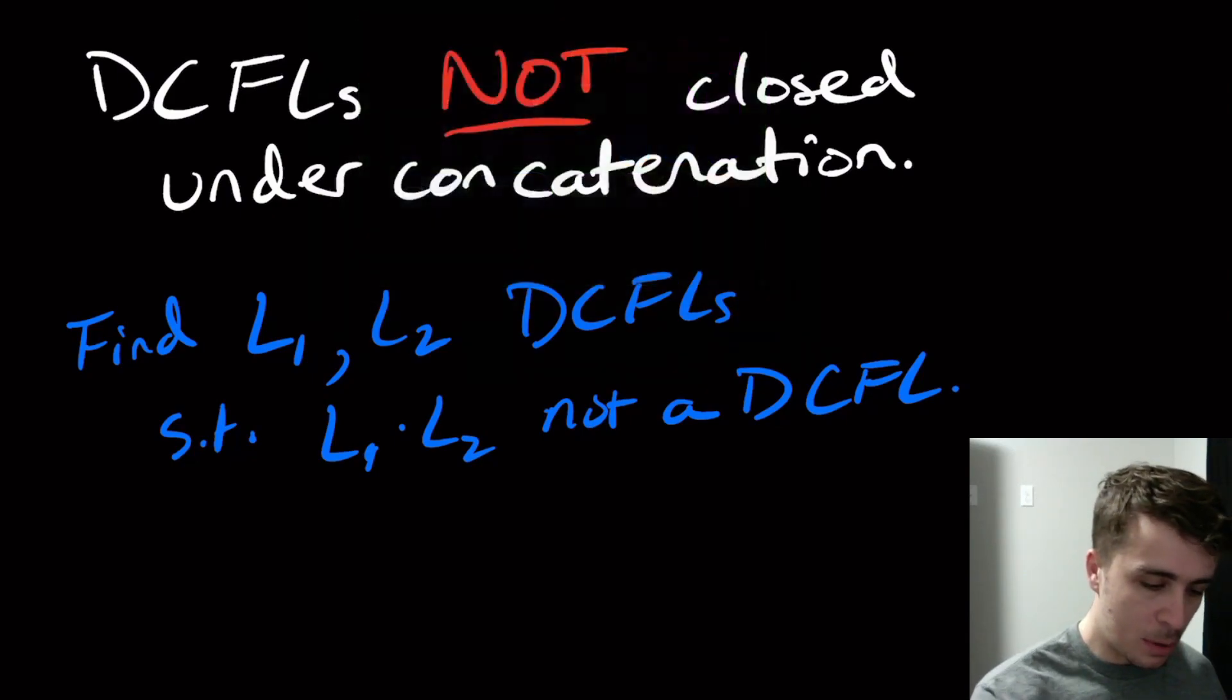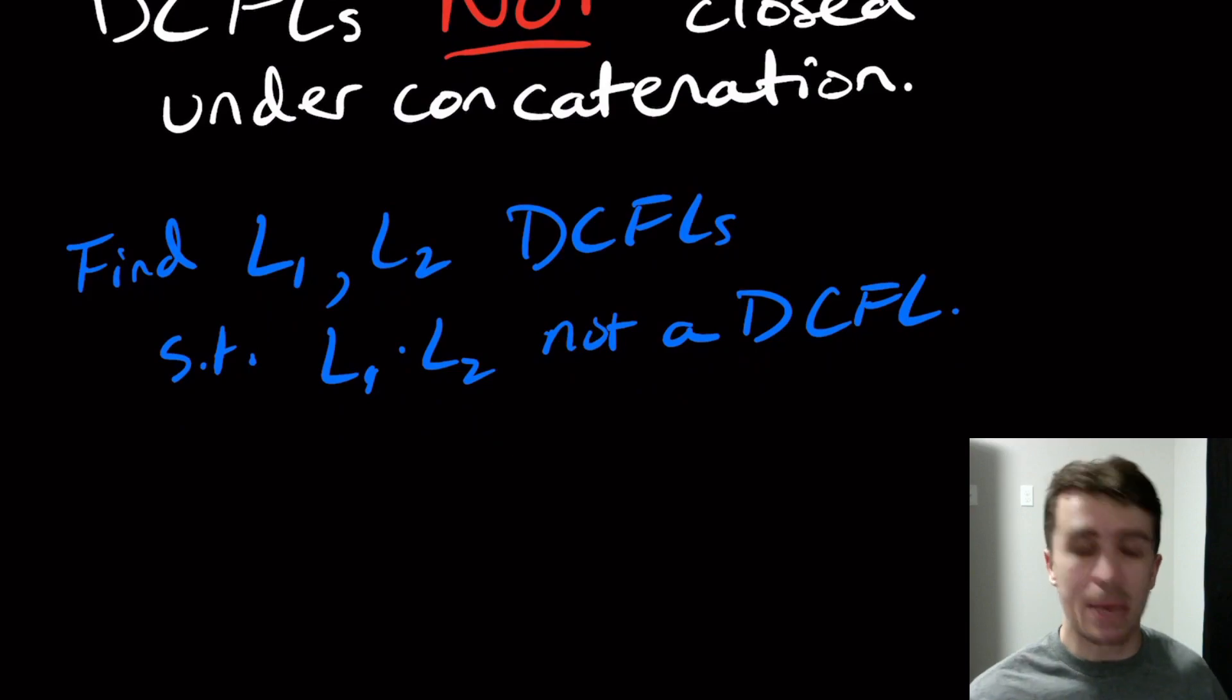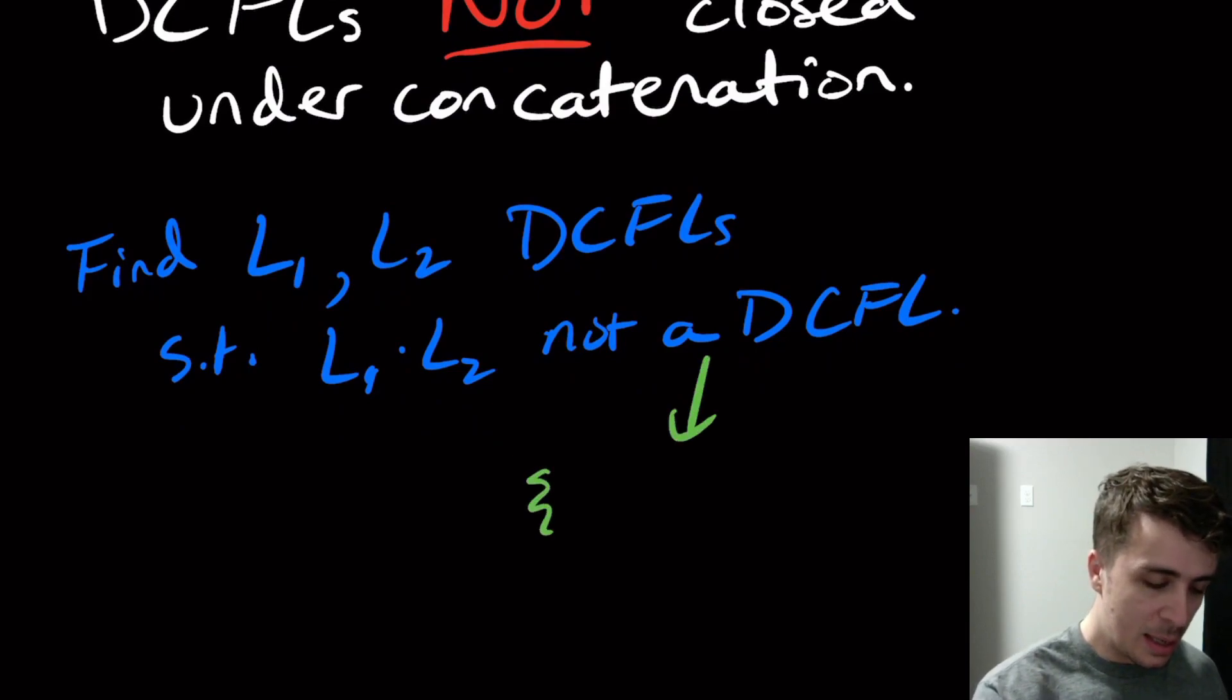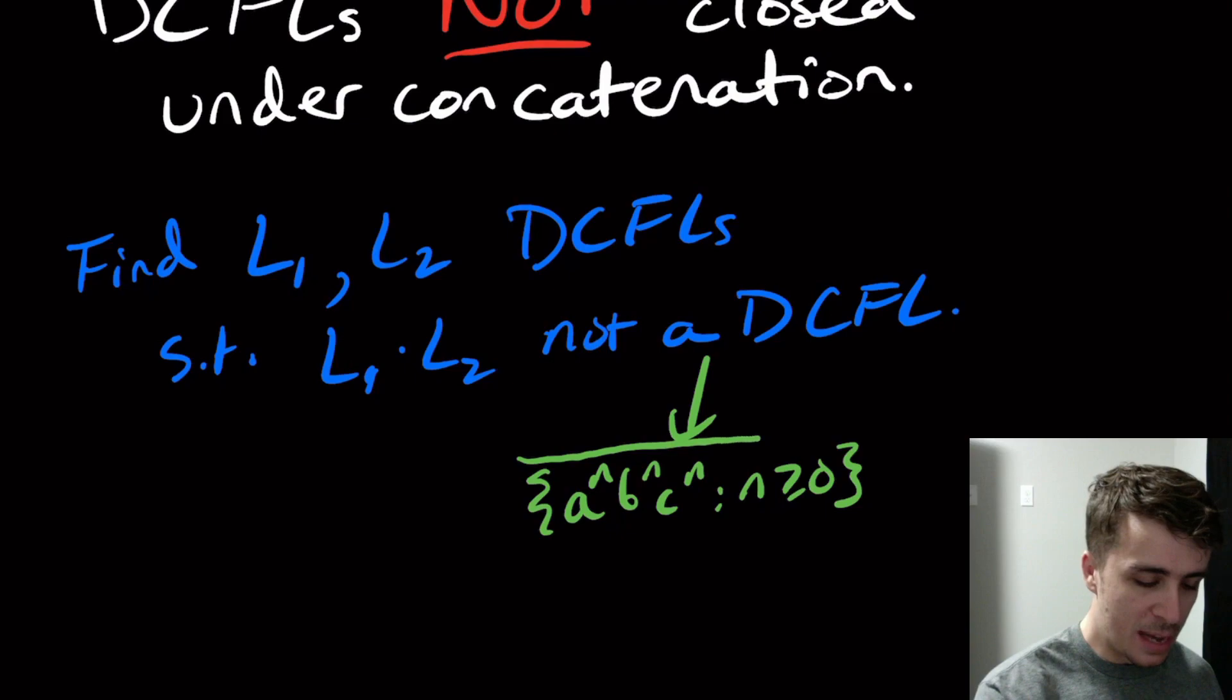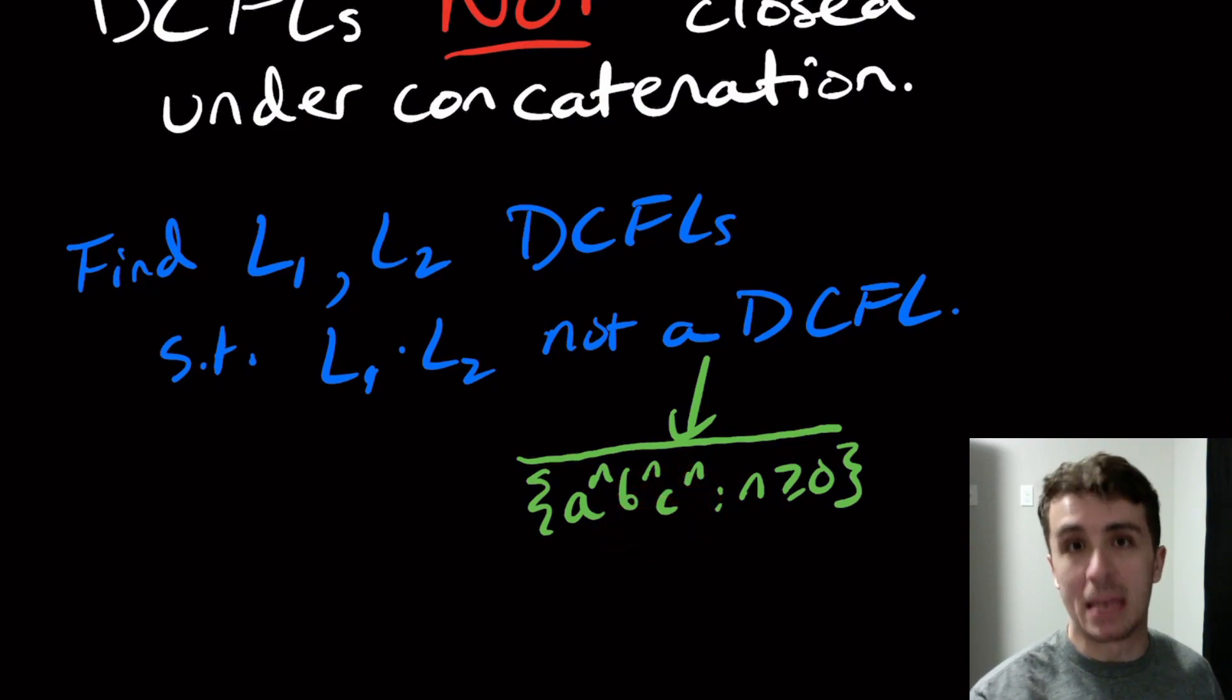And the prototypical language that we know to not be a DCFL is A to the N, B to the N, C to the N, or for any N at least zero, and take the complement of that. And it's not a DCFL because if it were, then its complement would also be a DCFL because DCFLs are closed under complement, but this guy's complement is not even context-free and therefore cannot possibly be a DCFL. So this guy is not a DCFL.